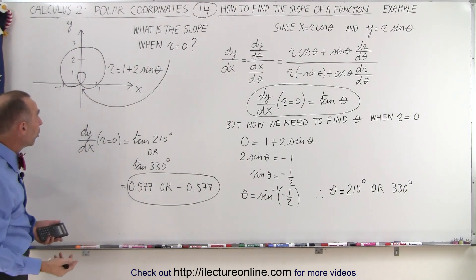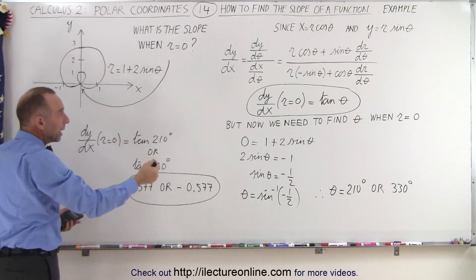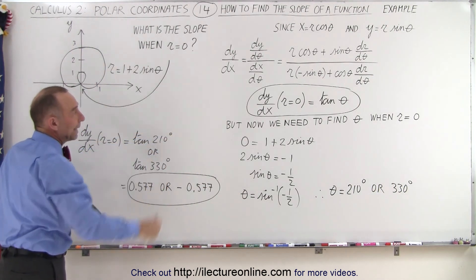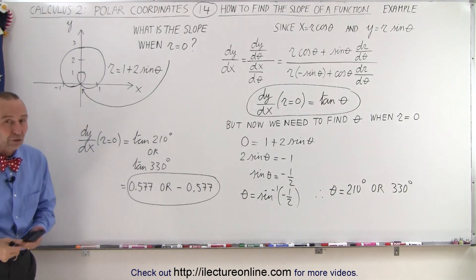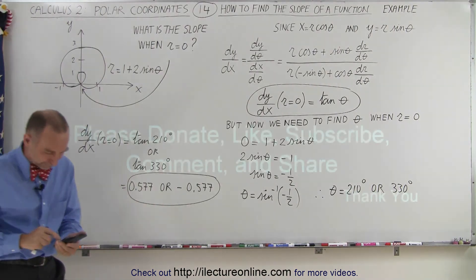Now if you want to find the slope when theta equals 0 degrees or 90 degrees, something like that, of course then you again plug in a new condition in your general equation and find the slope elsewhere. And that's how it's done. Thank you.